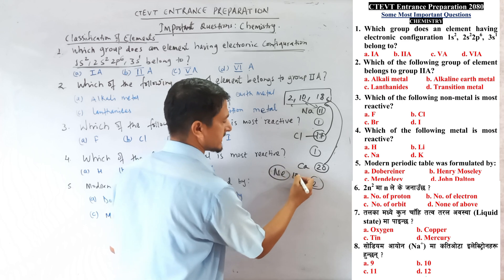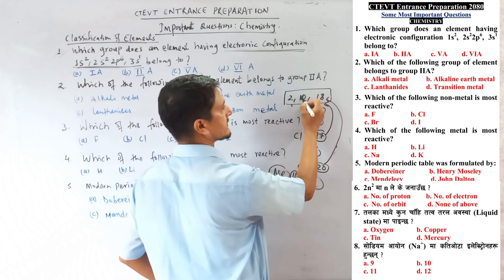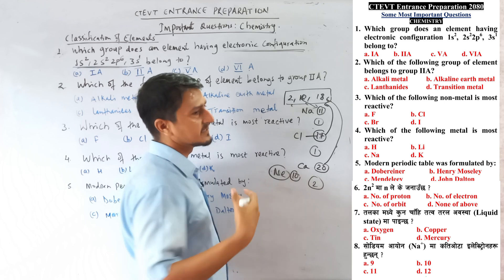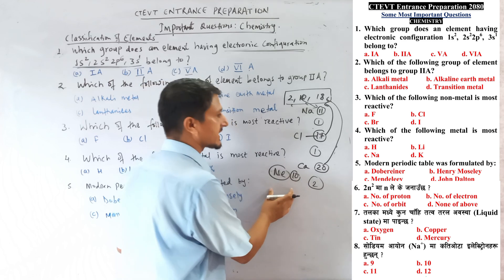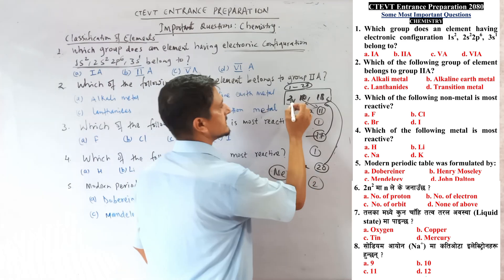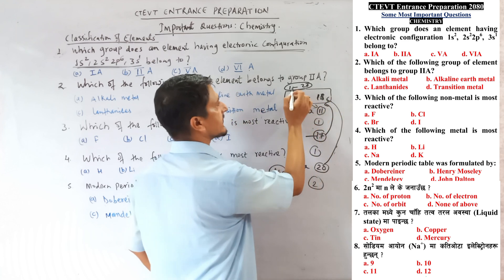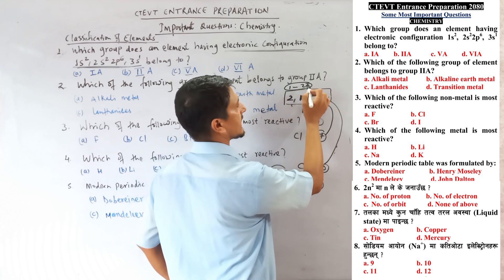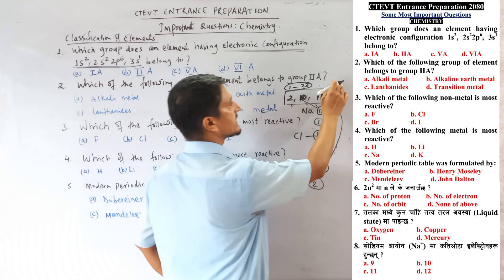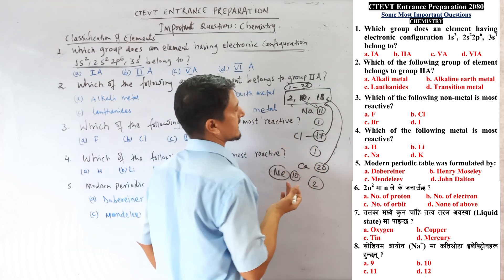Neon is atomic number 10. 10 minus 10 equals 0. Zero means noble gas or inert gas. The 2, 10, 18 formula is used from 1 to 2, hydrogen to calcium.